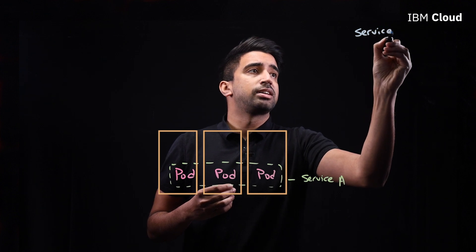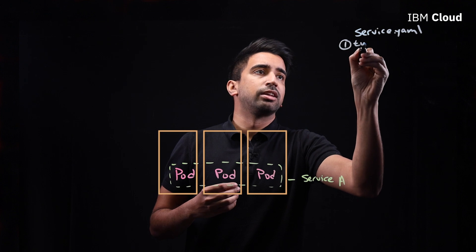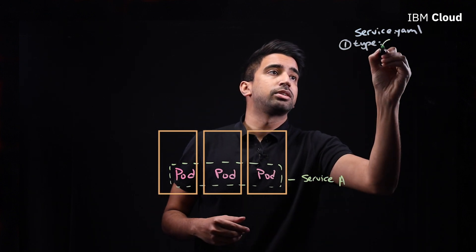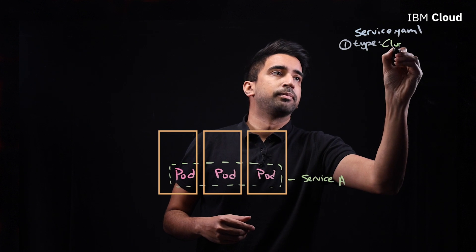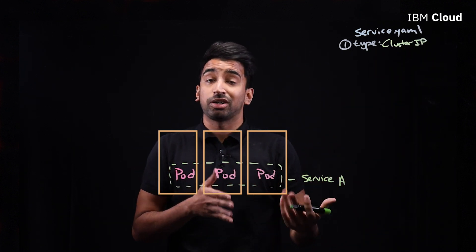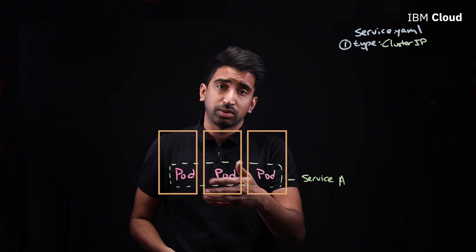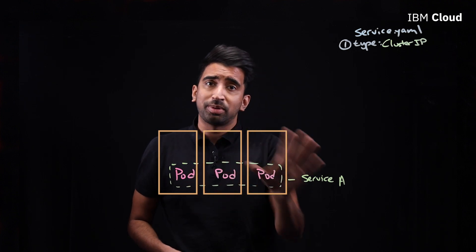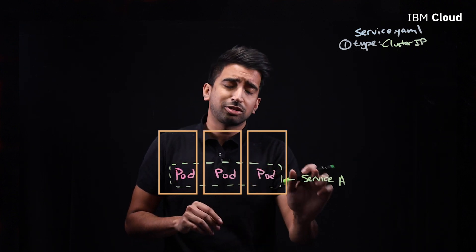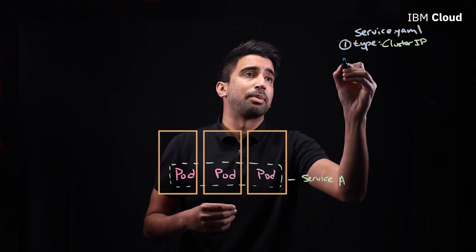Let's say we've got a service.yaml that defines that service. One of the core things you can define in that is going to be a type, and we're going to start with the basic one: ClusterIP. Basically every service that gets created in Kubernetes has a ClusterIP. It enables access to that service from within the Kubernetes network, not the external network.